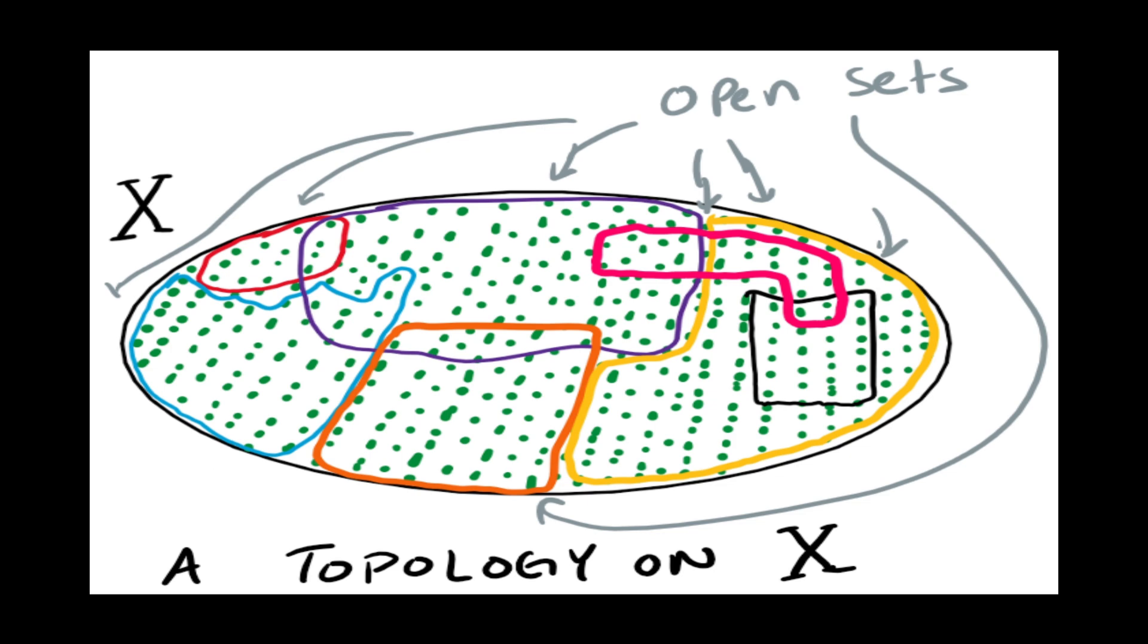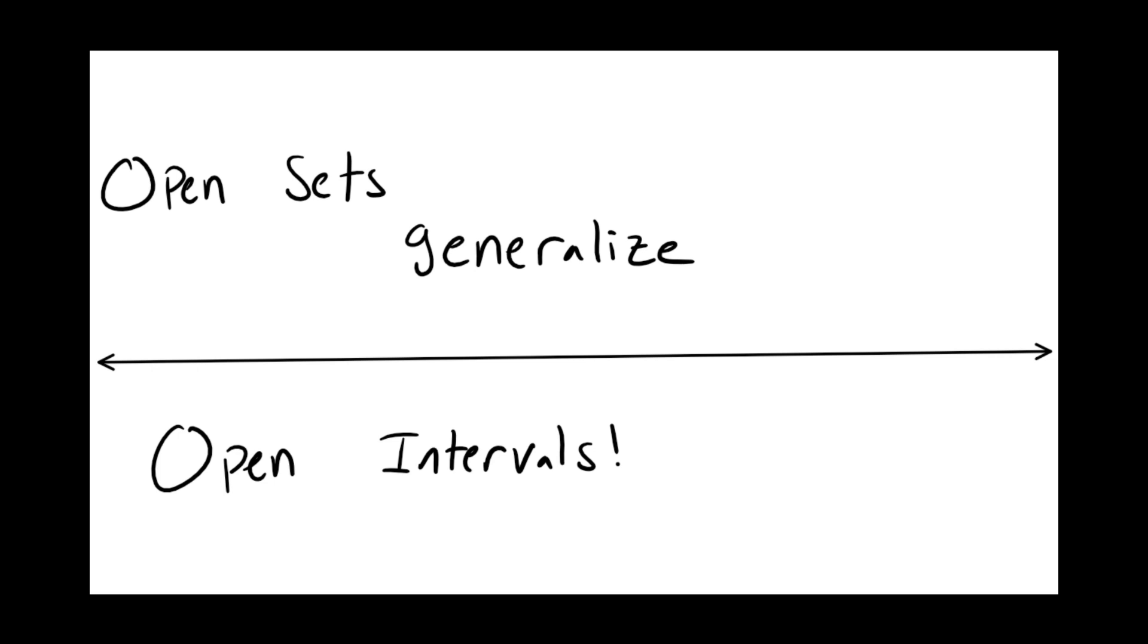So, the structure of a topological space depends entirely on the open sets. In fact, the name open set should remind you of something. Open intervals behave exactly like this. The notion of a topology on a set generalizes open intervals to sets other than the real number line.